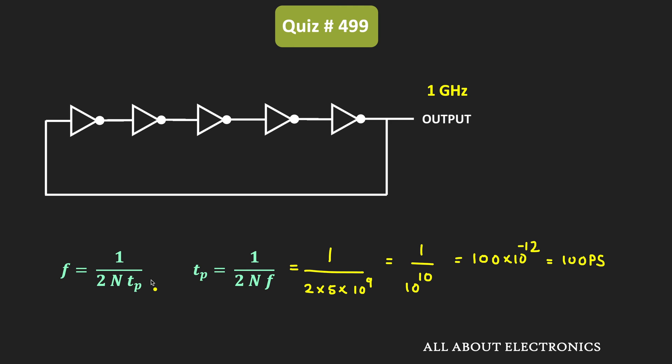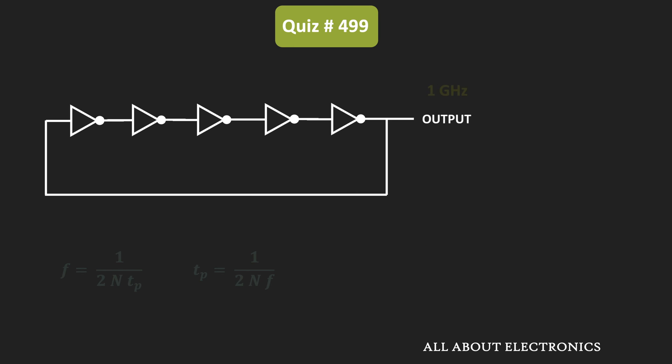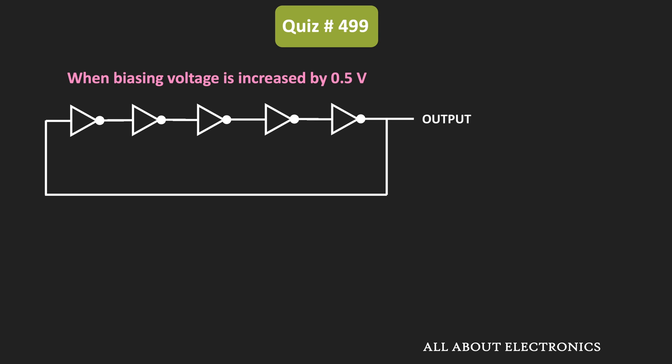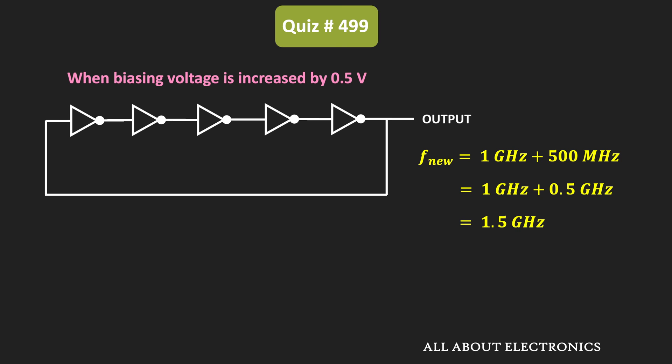Now, we have been given that in this ring oscillator, the biasing voltage of each inverter is increased by 0.5V. With this increase in biasing voltage, the oscillation frequency will also increase by 500 MHz. That means the new oscillation frequency is equal to 1.5 GHz.